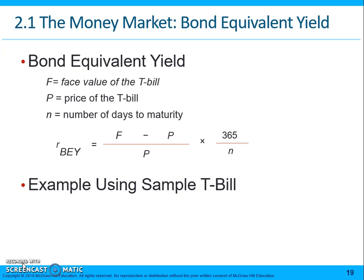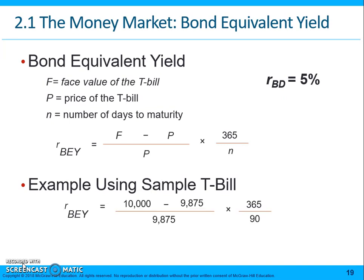We do that using this formula: the bond equivalent yield equals face value (F) minus price (P), divided by price, times 365 divided by the number of days to maturity. Using our original example with a 5% bank discount rate, that's ($10,000 − $9,875) ÷ $9,875 × (365 ÷ 90), giving a bond equivalent yield of 5.13%.